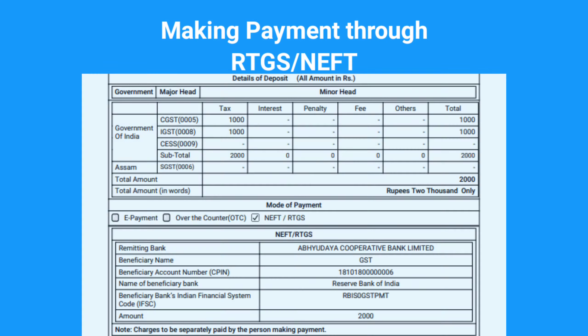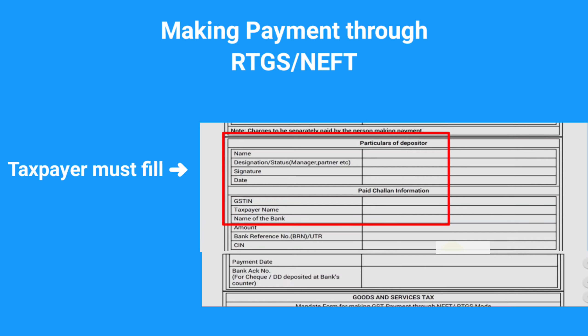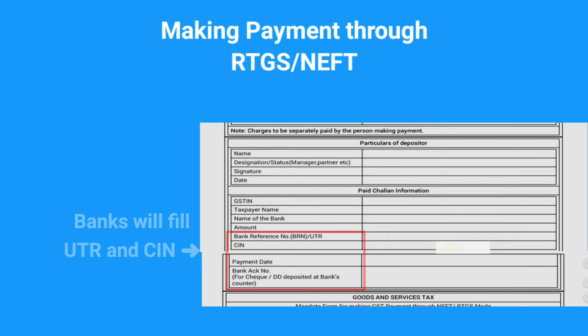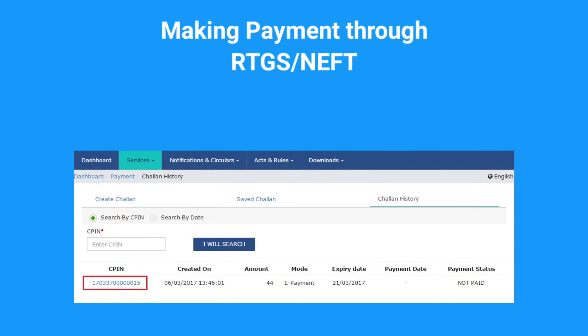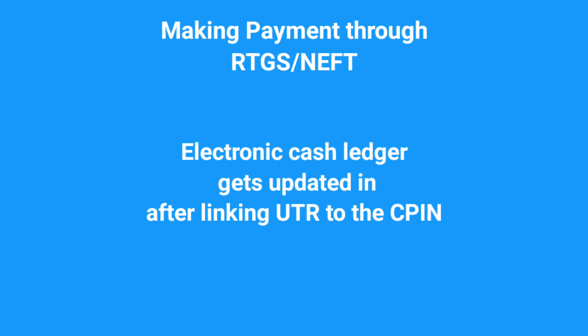Third, for NEFT or RTGS payment mode, fill up the remaining particulars asked on the challan including the RTGS or NEFT mandate such as depositor details and cheque details, and sign it manually. Submit it to the remitting bank you earlier chose while generating the challan, along with the cheque or by using the account debit facility. Within two hours, the bank will process this and you will receive a Unique Transaction Reference number, i.e. UTR number, and CIN, i.e. Challan Identification Number, on your registered email ID or mobile number. Next, log in to the GST portal, go to challan history, click on the hyperlink against the appropriate CPIN, enter the UTR number, and click on 'Link UTR'. The cash ledger gets updated.